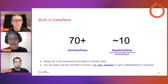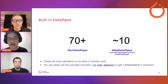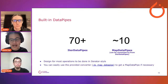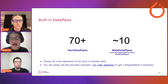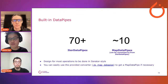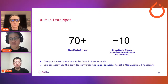We have intentional design for operations to be executed in iterator style without any loss of functionality compared to map style, because we believe iterator style can cover pretty much all use cases. But if you really want a map data pipe for random access to individual elements, we also provide a built-in converter to convert a map data pipe from an iter data pipe.